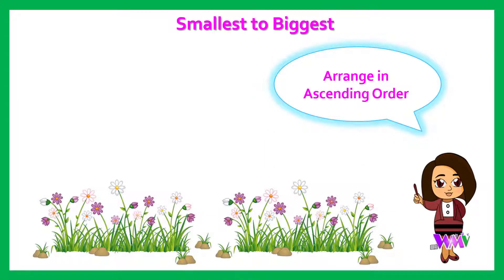Let's arrange the numbers from smallest to biggest, that is in ascending order. So tell me children, what will be the ascending order for these numbers? 9, 11, 17.